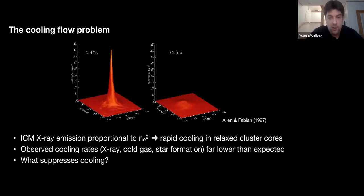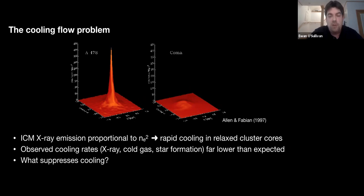To talk about feedback, we have to talk about the cooling flow problem, identified in galaxy clusters — where most of our knowledge of AGN feedback actually comes from. Clusters could be split into two categories: disturbed systems like the Coma cluster, which were still forming or had undergone mergers and showed no particular central X-ray brightness peak; and more relaxed systems like Abell 478, showing very strong central X-ray emission peaks. X-ray emission in galaxy clusters comes primarily from Bremsstrahlung, so the rate depends on density squared. Where gas relaxes and flows to the center, building up to high densities, you get very strong X-ray emission and therefore rapid cooling, as the gas radiates away its energy quite rapidly.